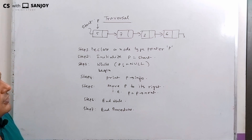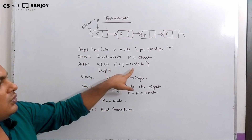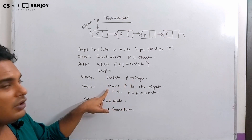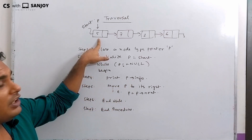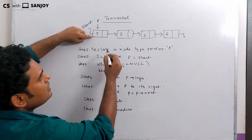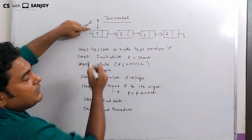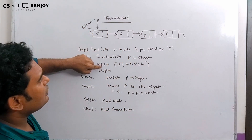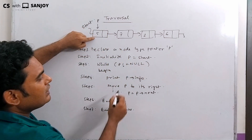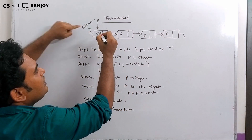Okay, I am going to proceed with the code. P not equals to null — print P info and print the information. So initially, look at the start pointer. P points to start. Now P is not null.